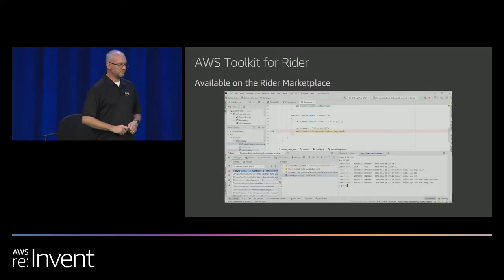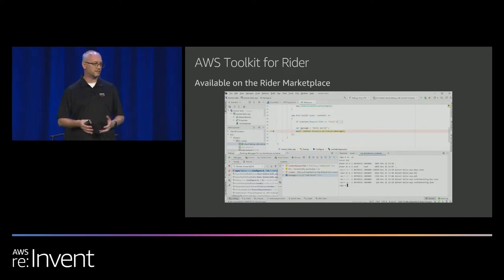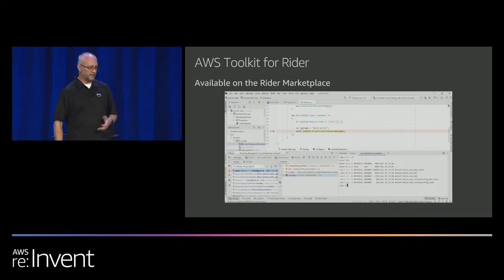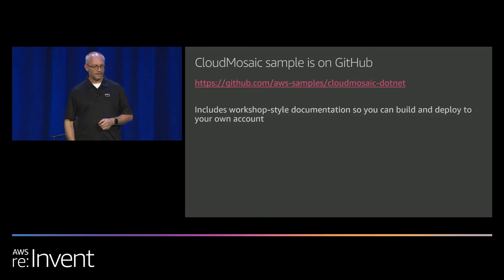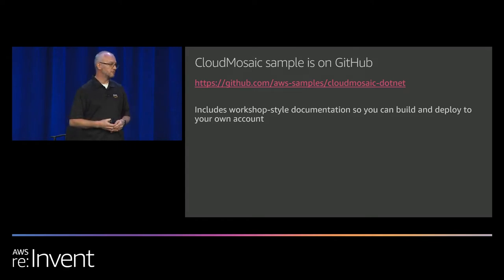We have a new toolkit out — Toolkit for JetBrains Rider. Just like our Visual Studio Code toolkit, this is targeted at serverless development. It's free, available on the JetBrains Rider marketplace, and it's also open source on GitHub. And last but not least, the Cloud Mosaic sample that we first showed at re:Invent last year is open source and on GitHub.